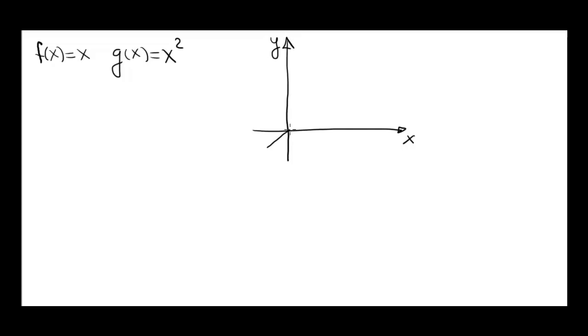This is f of x equals x, just a line y equals x, and this is g of x equals x squared. So it comes down like that, goes up, and we see that the region is right here enclosed by the two functions.